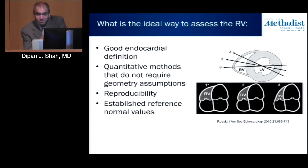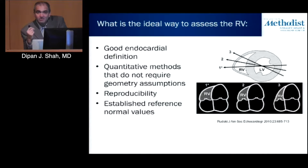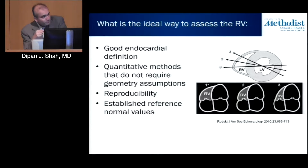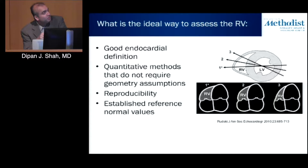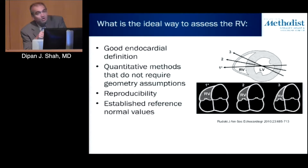The reason this matters is because the RV has a very unusual shape. Compared to the LV, which is nice and circular, the RV is a crescent shape. As a result, if you simply do a two-dimensional long axis view, depending upon where you slice the left and right ventricle, the apparent size of the RV can change quite a bit.